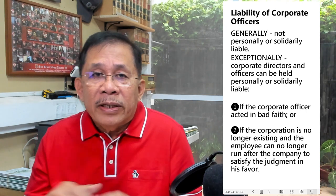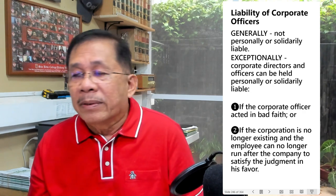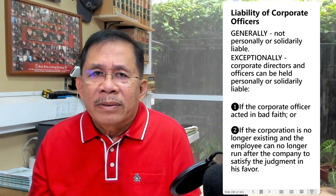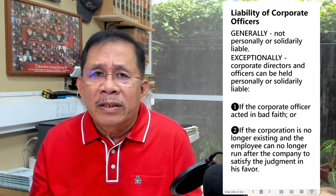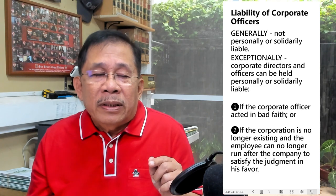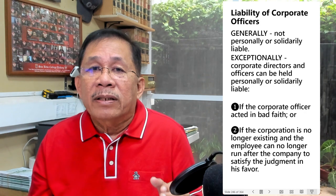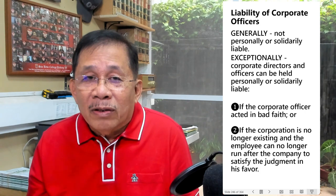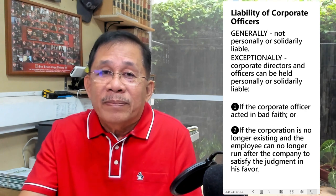Can corporate officers be held personally or solidarily liable with the corporation for back wages, damages, or other monetary claims? As a rule, corporate officers cannot be held personally or solidarily liable, even if they were impleaded in the complaint. But if the corporate officer acted in bad faith, or if the corporation is no longer existing and the employees can no longer run after the company to satisfy the judgment in their favor, then corporate officers or directors can be held personally or solidarily liable.